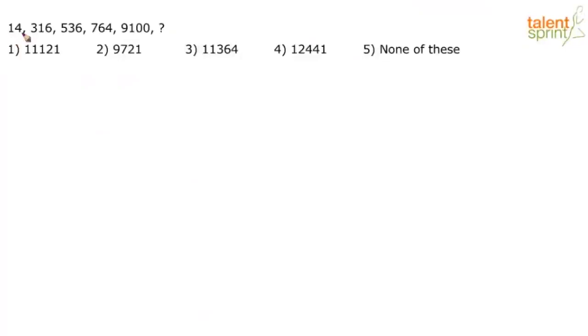Now this is a very typical one. It looks like 14 has become 316, so close to 20 times. Then suddenly it is only 536, then only 764, then only 9100. You know that part is really very confusing as to what is happening. There is a huge jump from first number to second number, almost 20 times or more, then suddenly it is like half a time, half a time, half a time and so on.